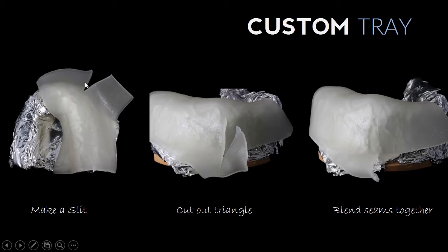Last little tip is when you're using this Triad material, it's not perfectly shaped to the arch, so we're going to have to cut it and use several pieces to make a tray that's going to be well adapted to our typodont.